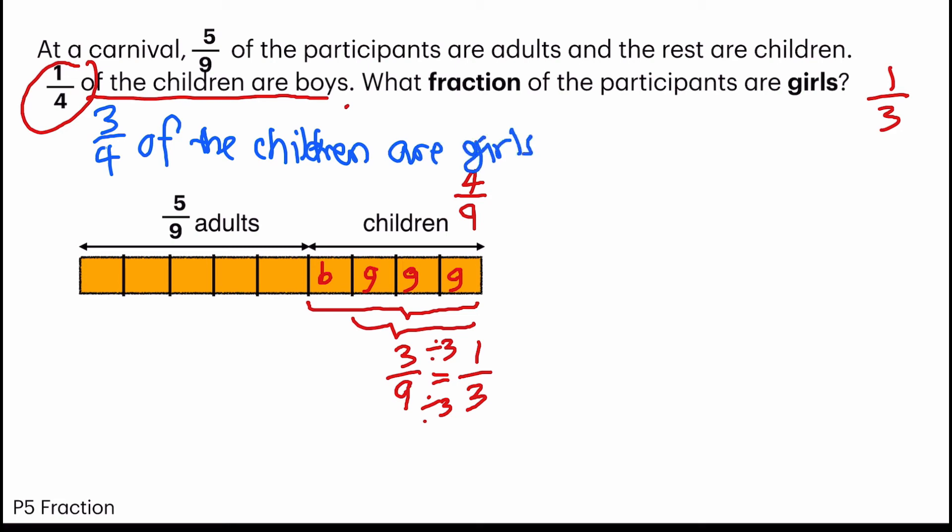Am I right? So now I'm going to write 3 quarter of how many children are there? There are a total of 4 out of 9.